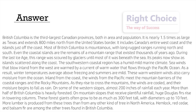More than half of British Columbia is heavily forested. On mountain slopes that receive plentiful rainfall, huge Douglas firs rise in towering columns. These forest giants often grow to be as much as 300 feet tall, with diameters up to 10 feet. More lumber is produced from these trees than from any other kind of tree in North America. Hemlock, red cedar, and balsam fir are among the other trees found in British Columbia.